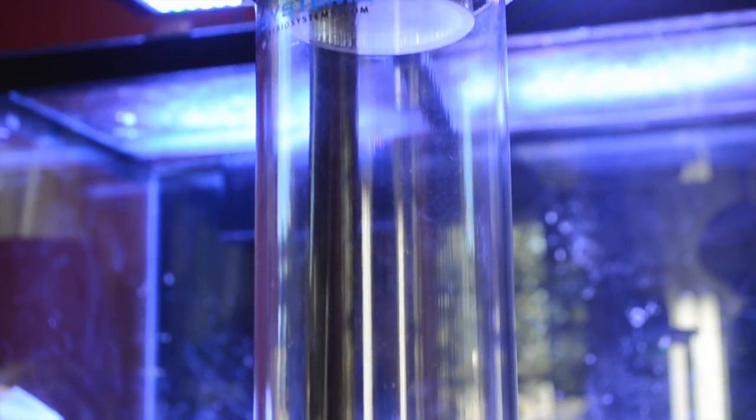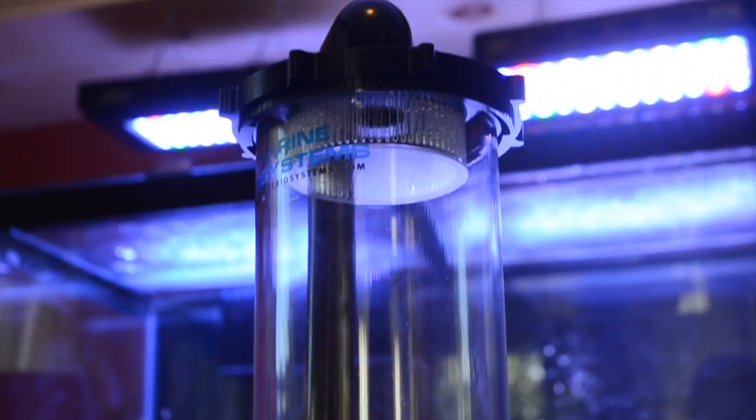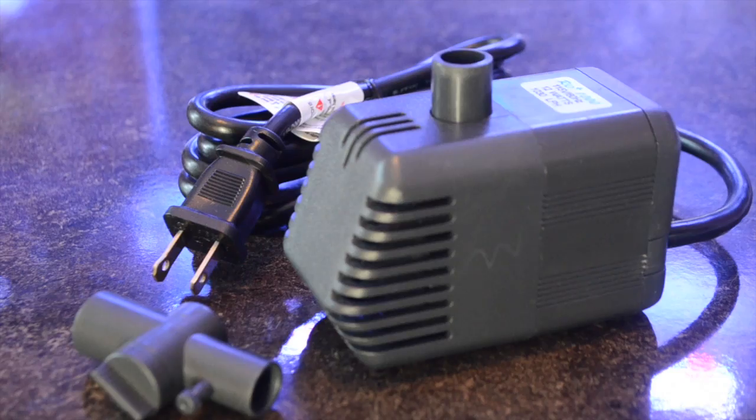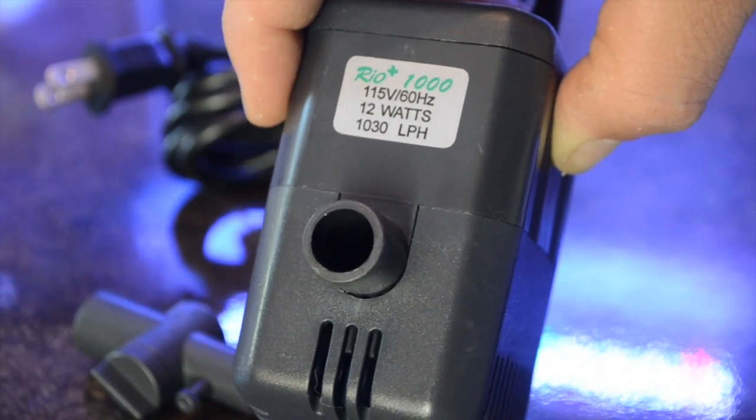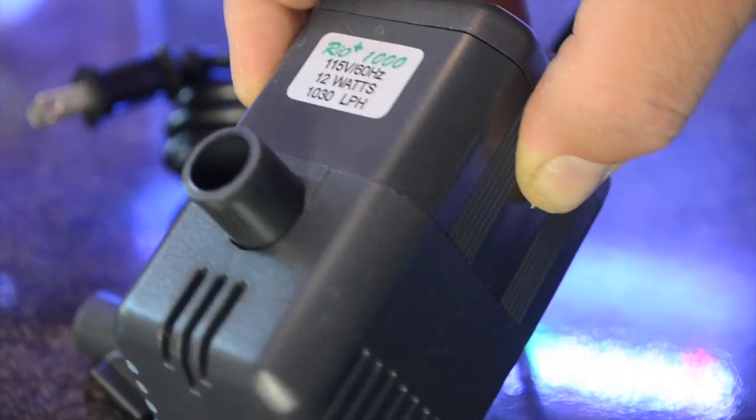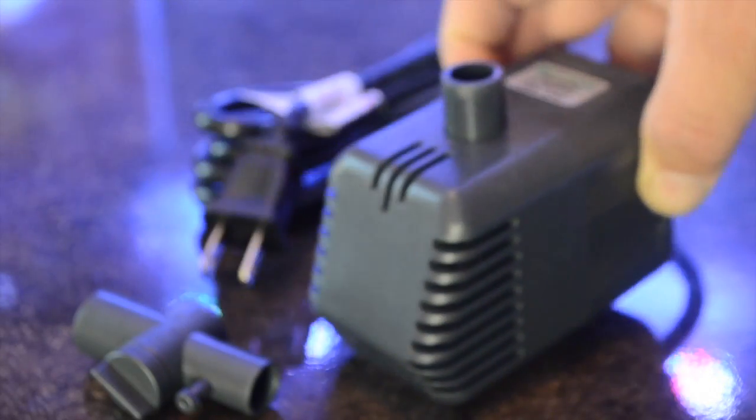The pump that it comes with is the Rio 1000 and it can push 275 gallons per hour. When you open up the package it comes with everything you'd expect, but all you're going to need for this application is the pump itself and the ball valve. It uses 12 watts of power and runs relatively quiet for a Rio.